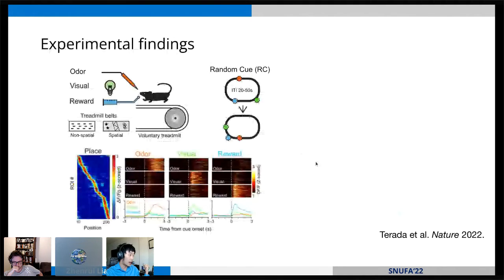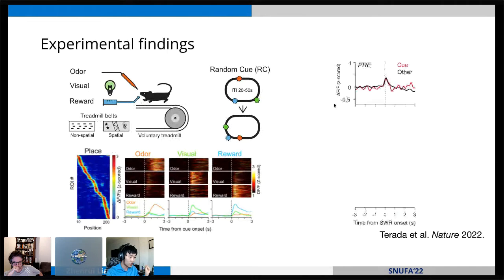And so online during the experiment, we found a robust representation of space, each row is one unit, as well as these random cues, odor, visual, and reward, as the animal was exploring the belt. And then during rest, we examined these sharp wave ripples, these signatures of memory recall, and find that prior to exposure to this task, the CA3 units, the cells coding for random cues, this odor visual reward, are indistinguishable from units coding for spatial cues in the recruitment by these sharp wave ripples.